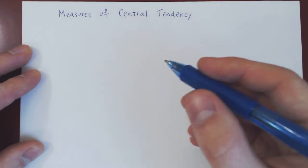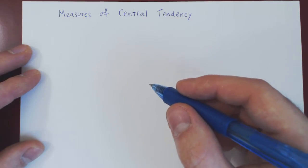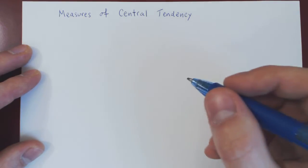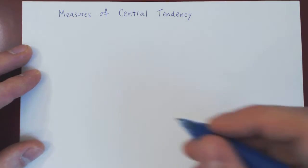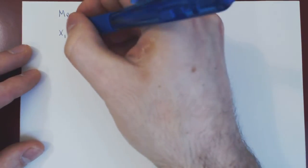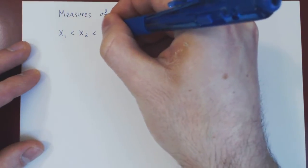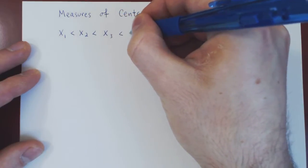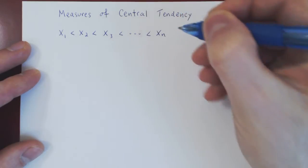Let's assume that we have a sample of n values, where n is a positive integer. And suppose we order our n values from the smallest to the largest one. So x1 would be the smallest value, less than x2, less than x3, all the way up to our largest value, xn.